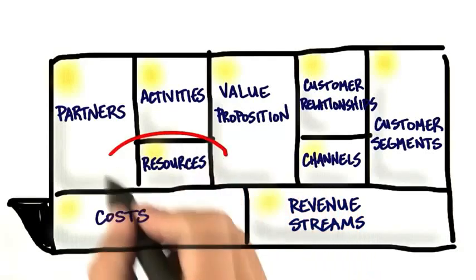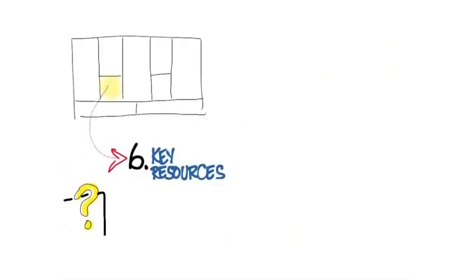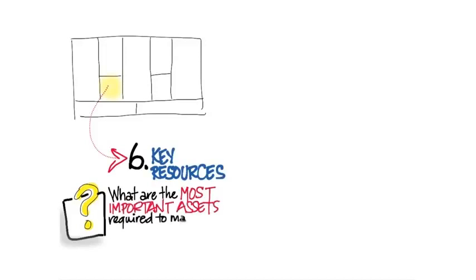The next piece you want to think about is what are the key resources. What do you need to make the business model work? What assets are important? And what's an example of an asset in a key resource?